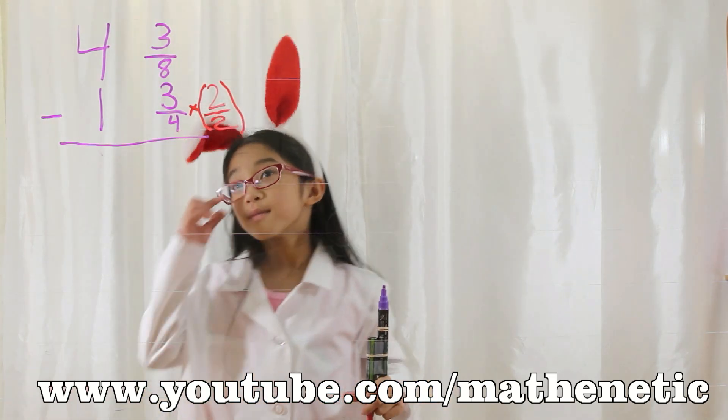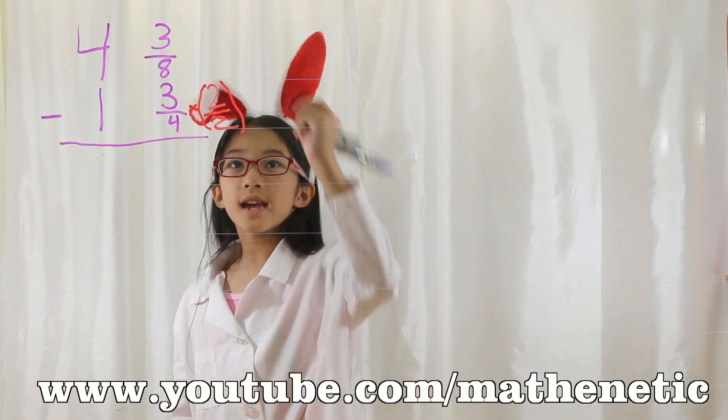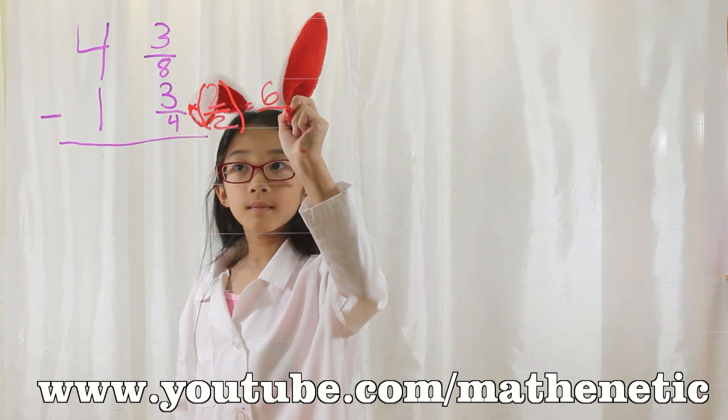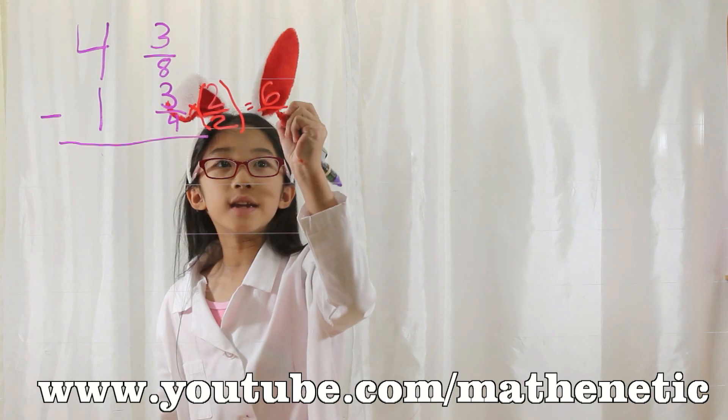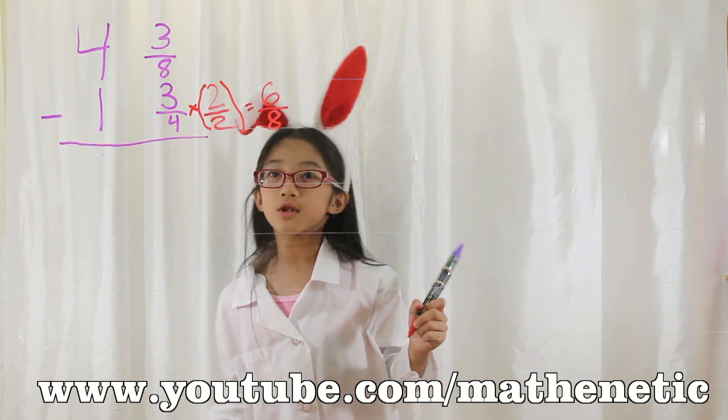Now that I've written that down, now we multiply. 3 times 2 equals 6, and 4 times 2 equals 8. So as I was saying earlier, 8 is equal to 8, right? Check!